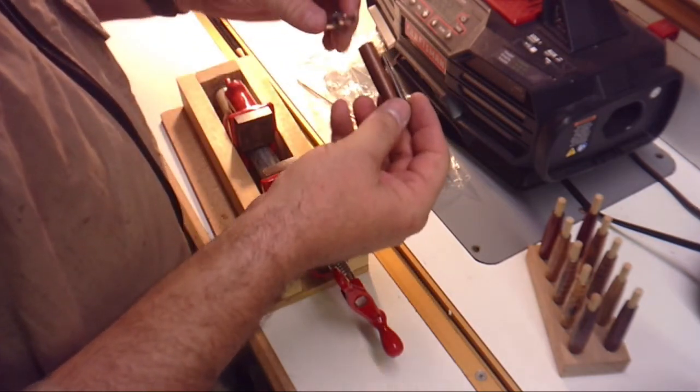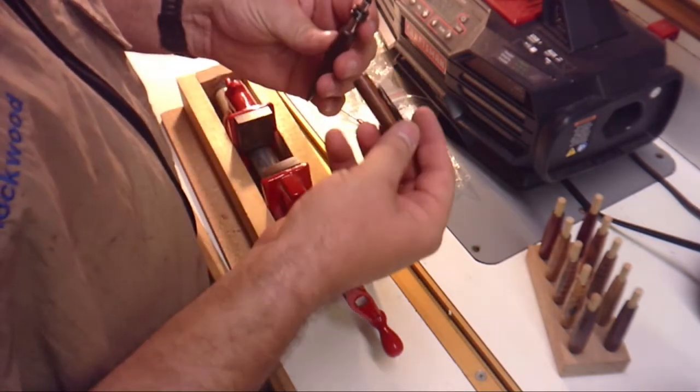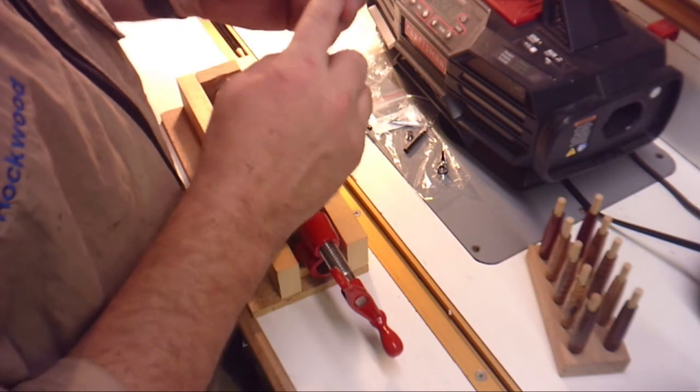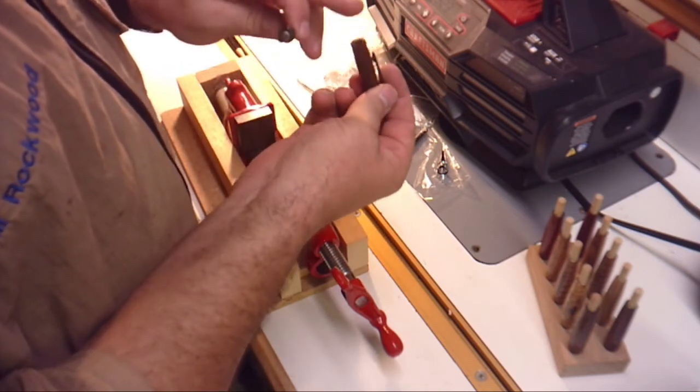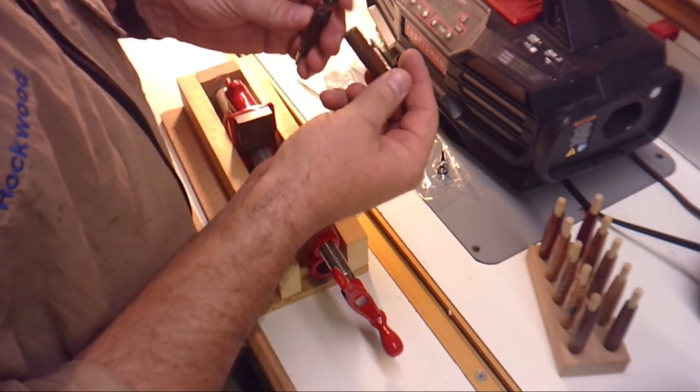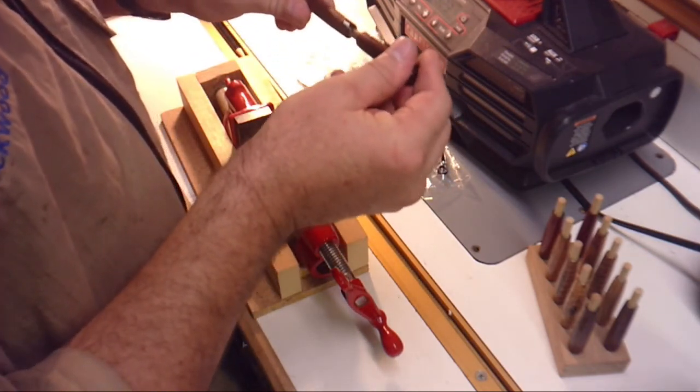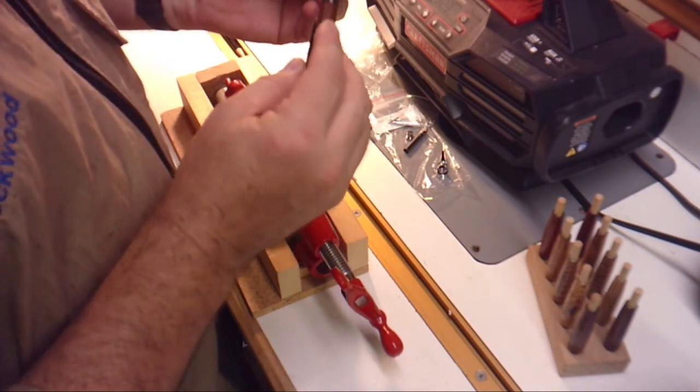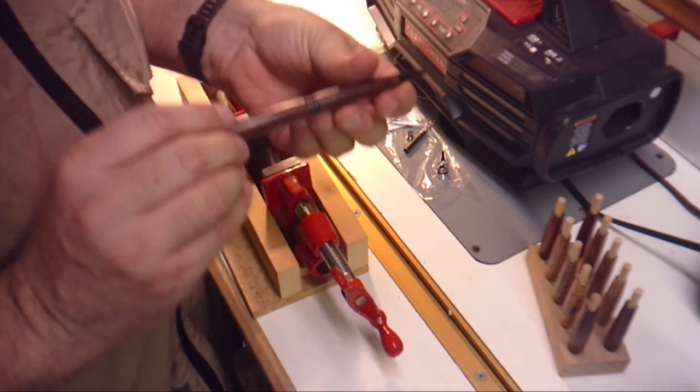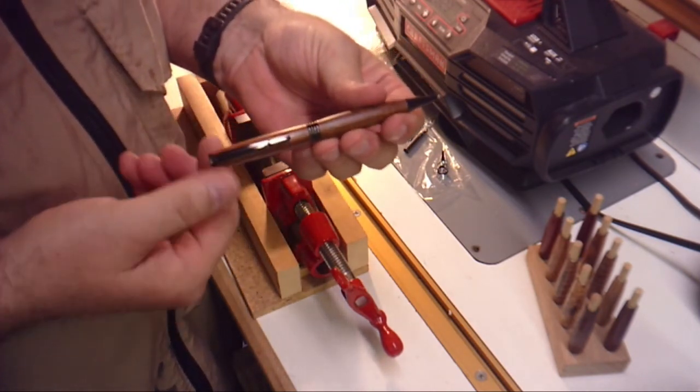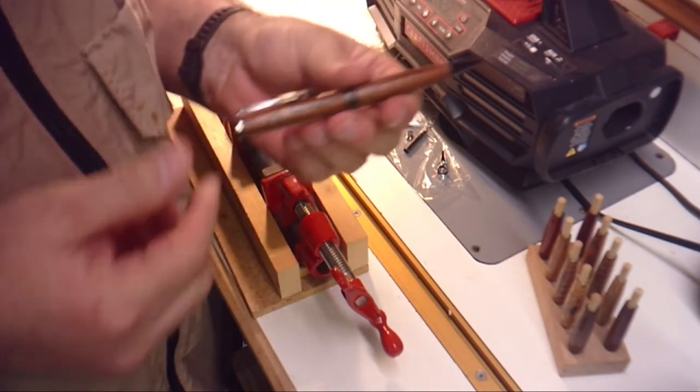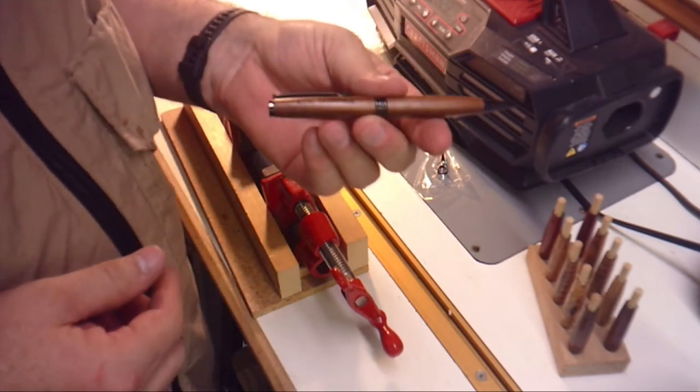Remember those dots I made earlier? There's one here, there's one over here. So I know these are my alignment dots for the grain. So what I will do is I will slide it together and make sure I've got good grain alignment. Advance, retract. This pen is done. Seven more.